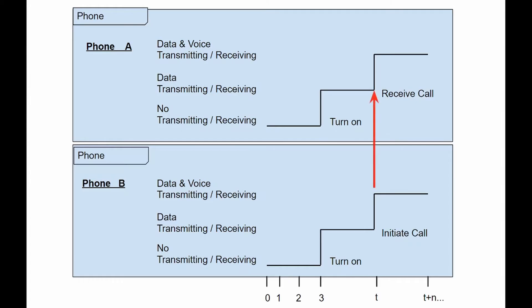Messages sent from one object to another can be displayed using simple arrows. The start and the end points of each arrow indicate when each message was sent and when it was received.